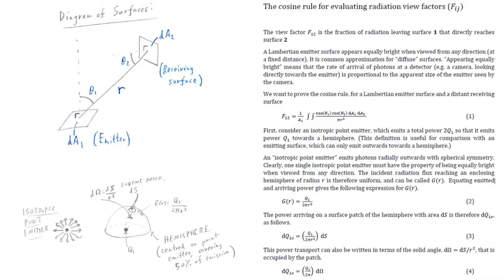The view factor F12 is the fraction of radiation leaving surface 1 which directly reaches surface 2. This is under the assumption that radiation travels, as photons, in straight lines. The Cosine Rule computes the view factor F12 when the emitting surface, surface number 1, is a diffuse emitter — more precisely, when surface number 1 is a special kind of diffuse emitter called a Lambertian surface.